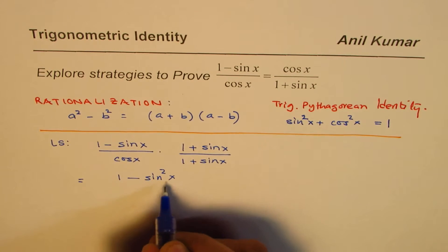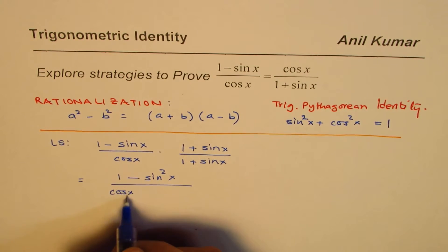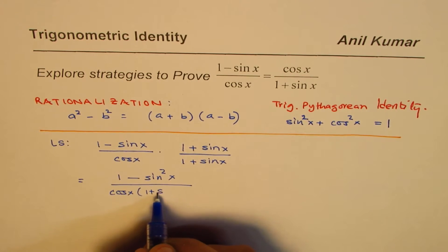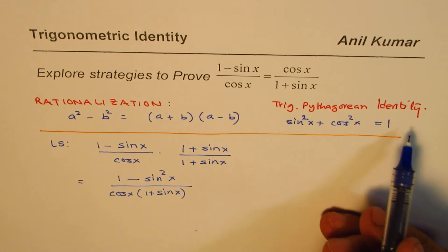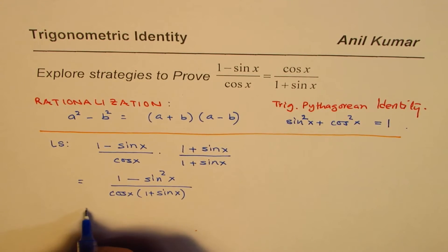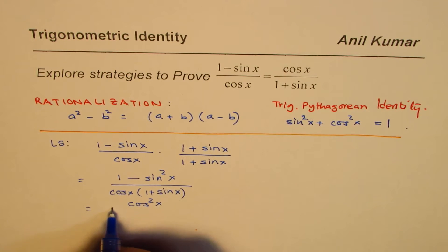And the denominator will be cos x times (1 + sin x). Now, what is 1 - sin²x? 1 - sin²x is cos²x. So we could write this as cos²x over [cos x(1 + sin x)].